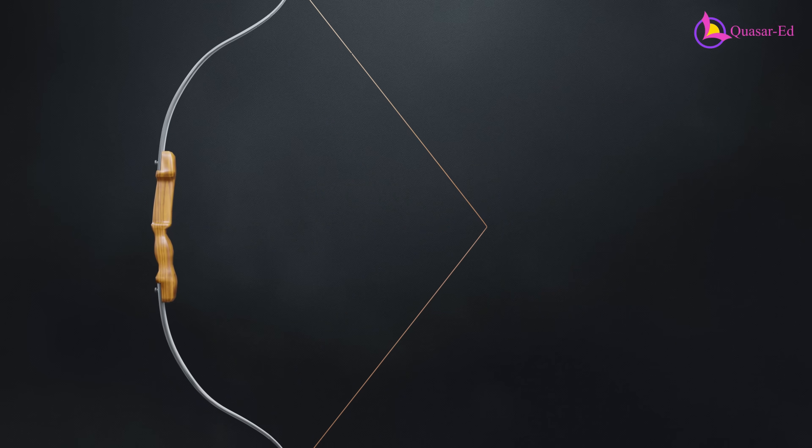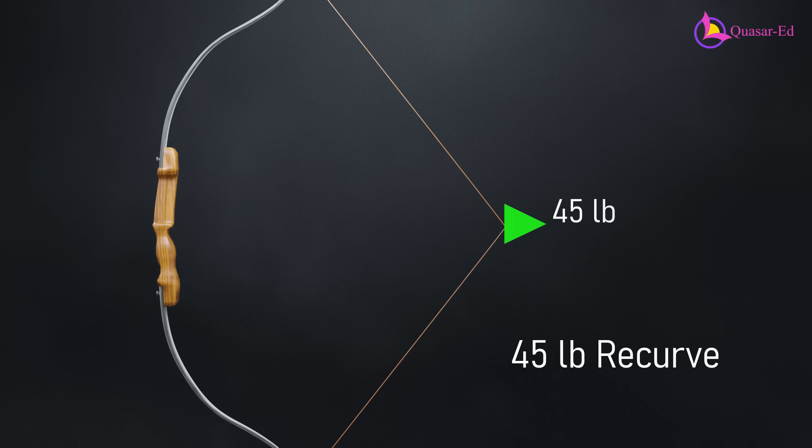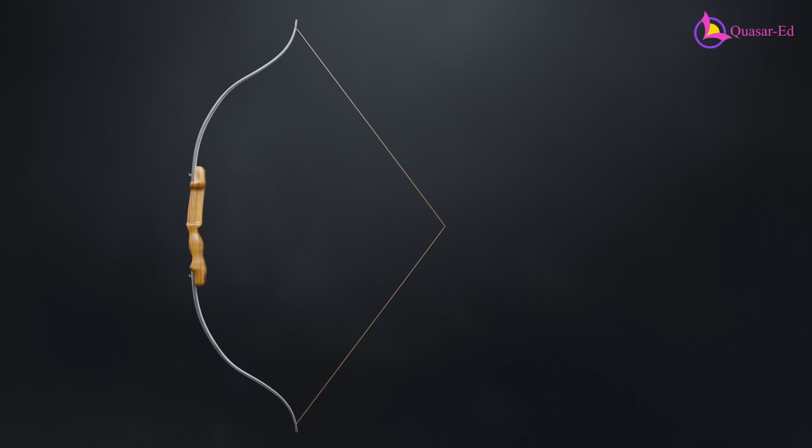For example, a 45-pound bow requires 45 pounds of force to pull the string to a standard full draw length of 28 inches. However, even if you can't pull a recurve bow to full draw, you can still shoot an arrow, just with less power.